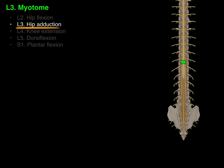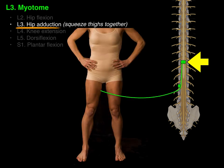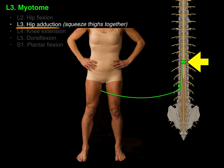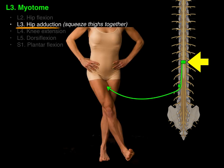Next is hip adduction, or squeezing your thighs together — think riding a horse. There's the L3 spinal cord level and the L3 vertebra; the descending nerve roots come down and go to the adductor muscles, the medial compartment of the thigh, producing hip adduction — adding toward the midline.